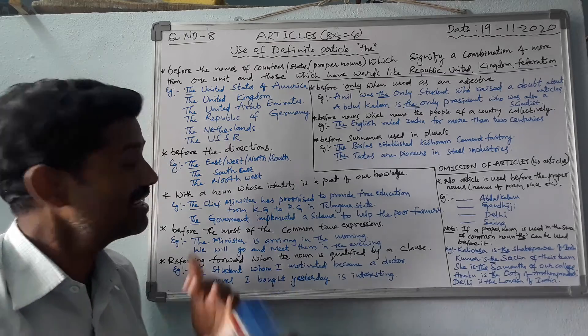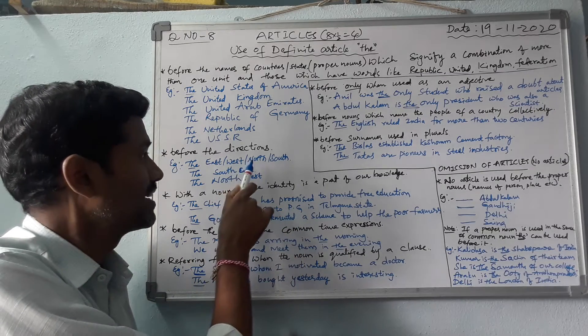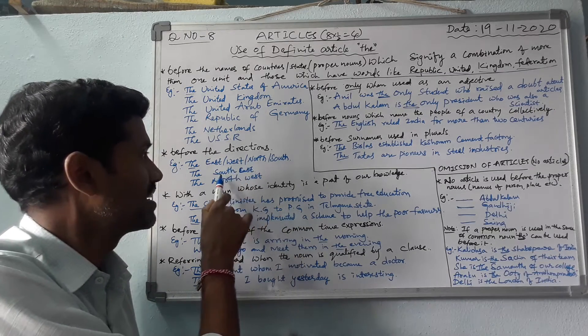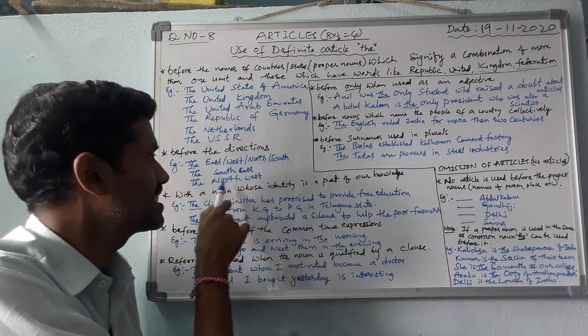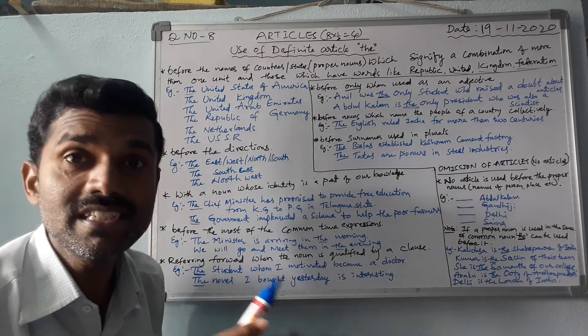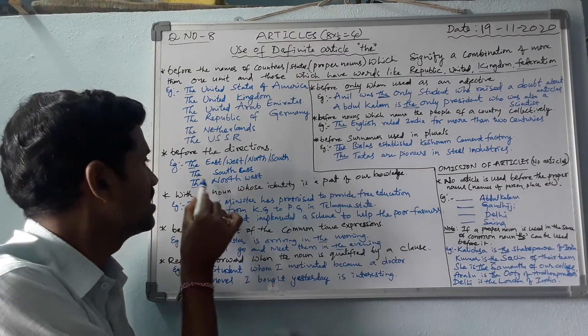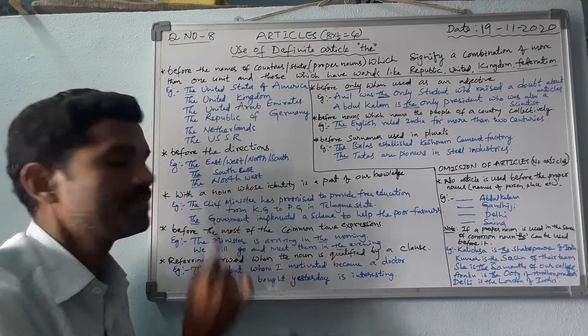Corners also — for directions and for corners: south, east, north, west — before these words the definite article 'the' is used.